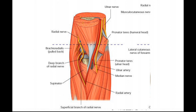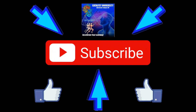To keep those straight, remember that superficial and sensory both start with an S — that can help you keep it straight in your mind. Hopefully this video gave you a good understanding of the radial nerve and its branches. Please make sure to like this video and subscribe to my channel for future videos and notifications. Thank you.